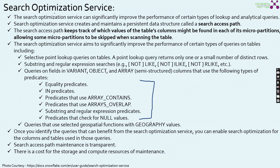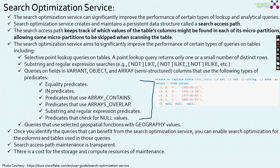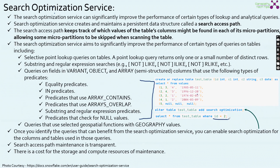Once you identify queries that can benefit from search optimization, you can enable it for the columns and tables used in those queries. Search access path maintenance is transparent — Snowflake maintains it automatically. Note that there is a specific cost associated: you pay more for both storage and compute. To enable it, simply run ALTER TABLE <table_name> ADD SEARCH OPTIMIZATION. After that, point lookup queries like WHERE id = 2 will utilize search optimization for enhanced performance.